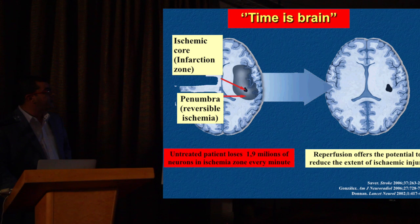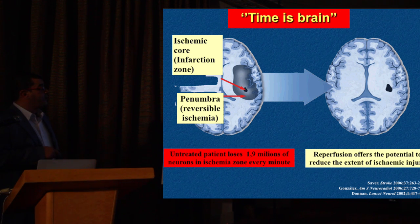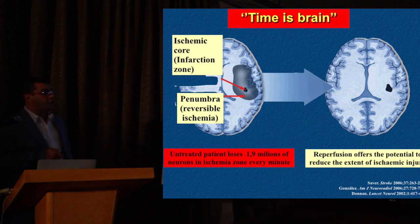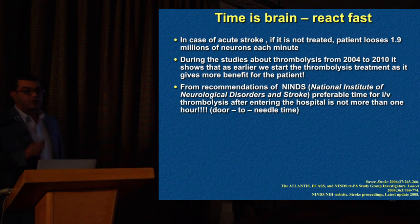From ischemia, we move to the concept: time is brain. We are always concerned because stroke has two components — the ischemic core infarction zone, which is irreversible even with mechanical thrombectomy, and the penumbra, which is reversible. We aim to decrease the penumbra by removing the clot and achieving reperfusion and revascularization. In each minute, we are losing around 1.9 million neurons, so we should act as fast as we can.